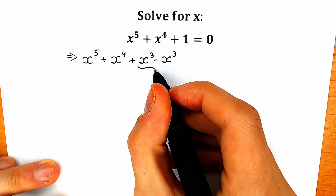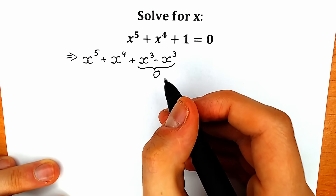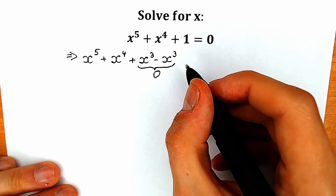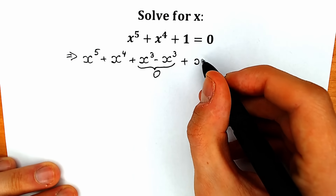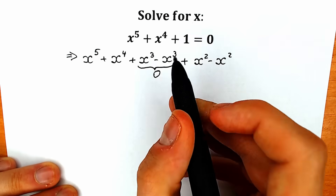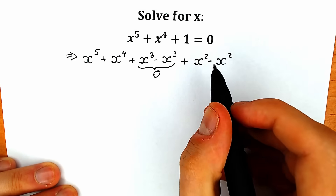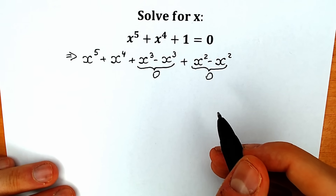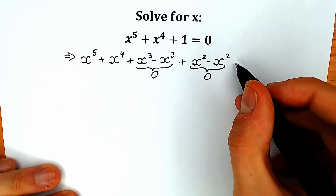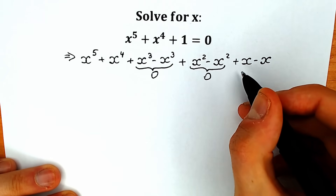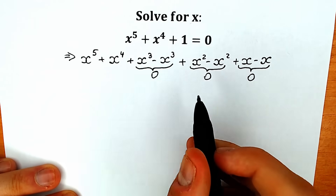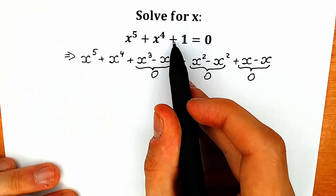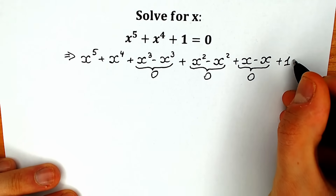This changed nothing — it is still equal to zero — but it helps us to factor our question. In the same way I'm going to write plus x square minus x square. We don't have an expression with the second power originally, but writing this changes nothing. And the same thing with x: plus x and minus x. When we simplify, we will have absolutely the same expression as in the beginning, but don't forget the plus one, still equal to zero.